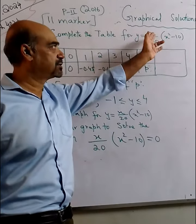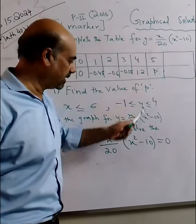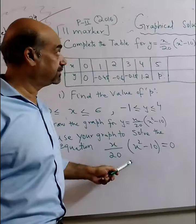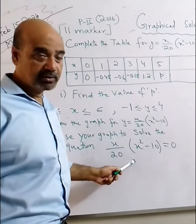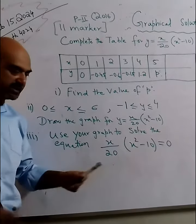Just look at the original equation which is given. It is y is equal to x upon 20, x square minus 10. These two are exactly matching, right? Yes. This equation and this given left hand side is exactly the same.